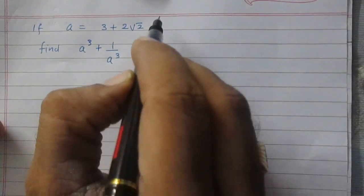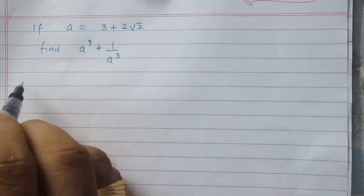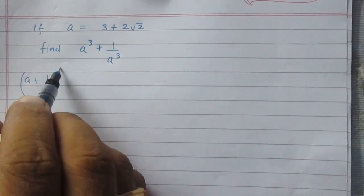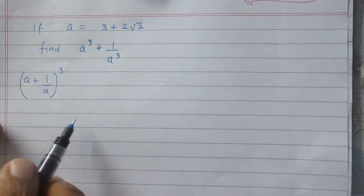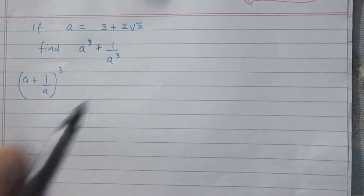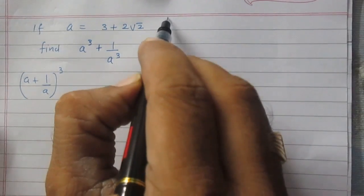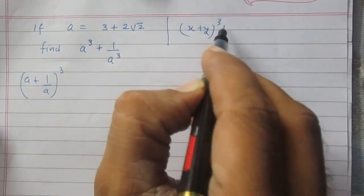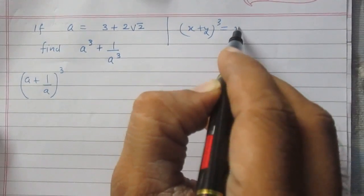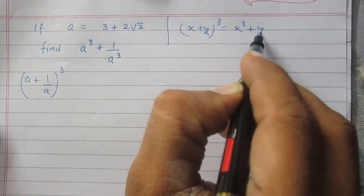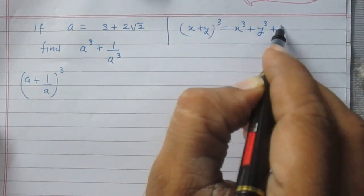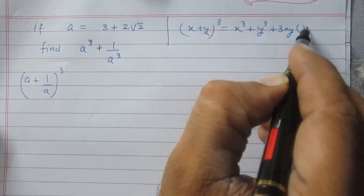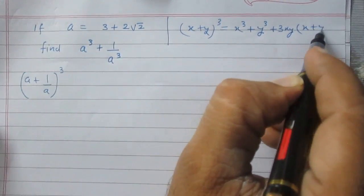Let us consider a plus 1 upon a whole cube. We can expand it using an identity: x plus y whole cube is equal to x cube plus y cube plus thrice of xy, whole multiplied by x plus y.